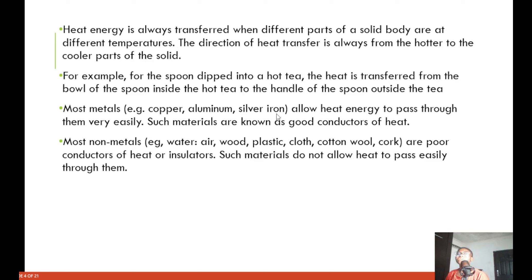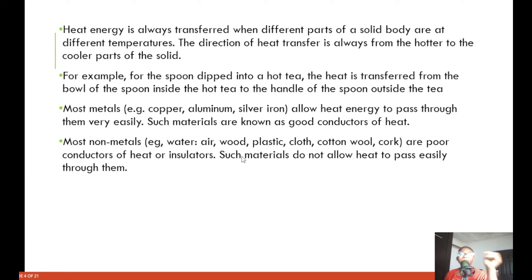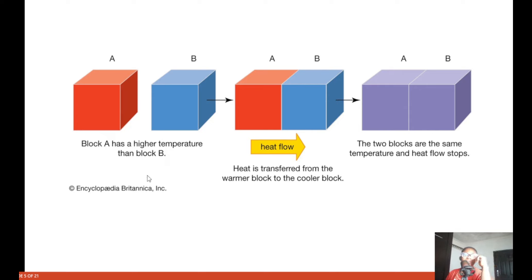Most metals — copper, aluminium, silver, iron — allow heat energy to pass through them very easily; such materials are known as good conductors of heat. Most non-metals, for example, water, air, wood, plastic, cloth, wool, and cork, are poor conductors of heat, also called insulators. Such materials do not allow heat to pass easily through them.